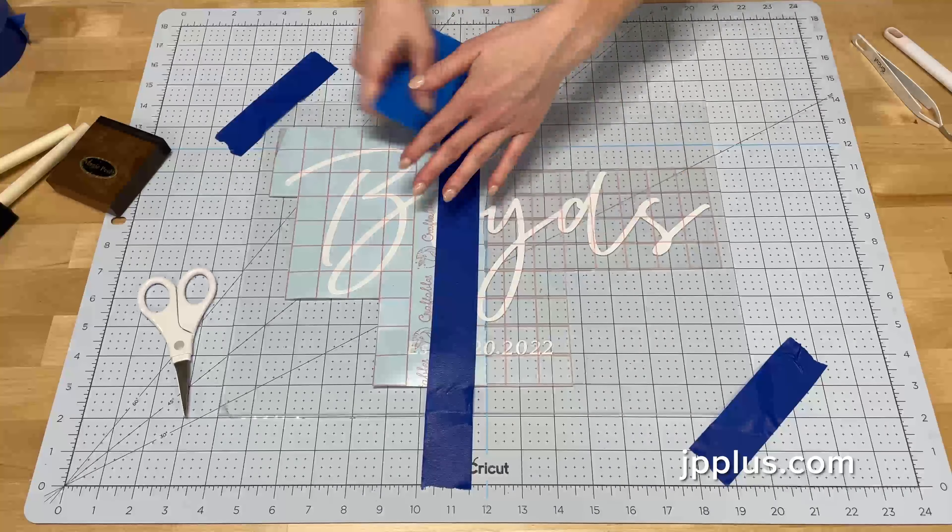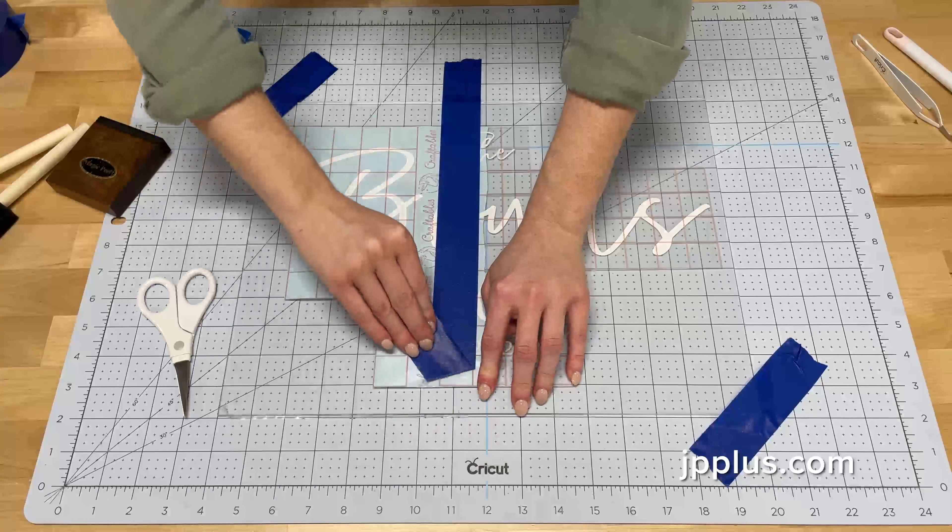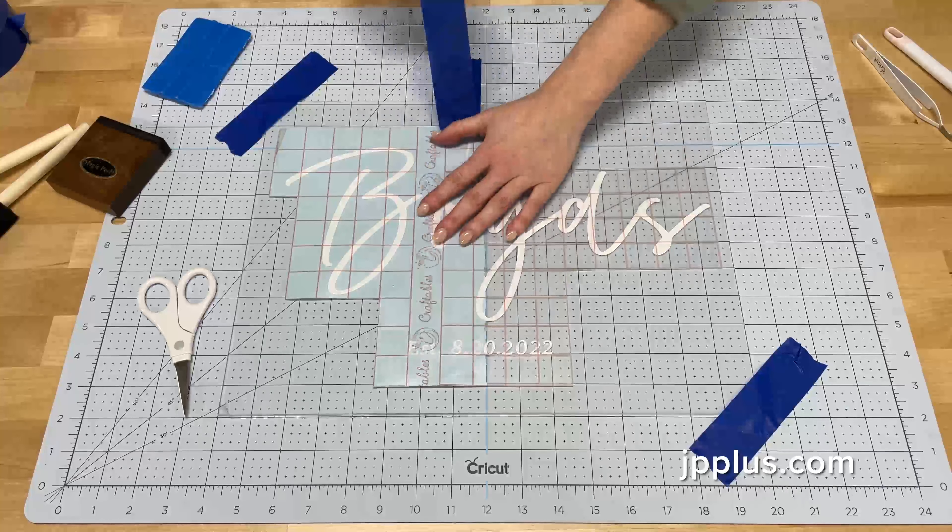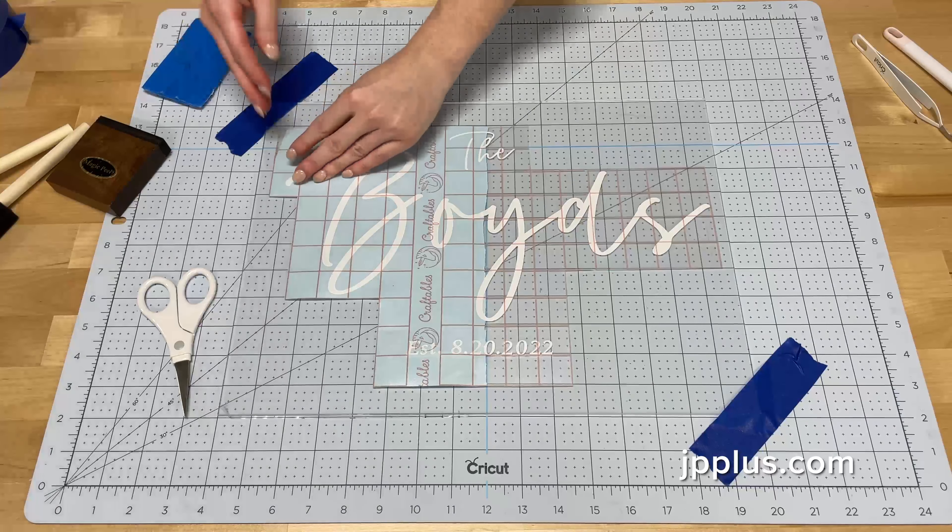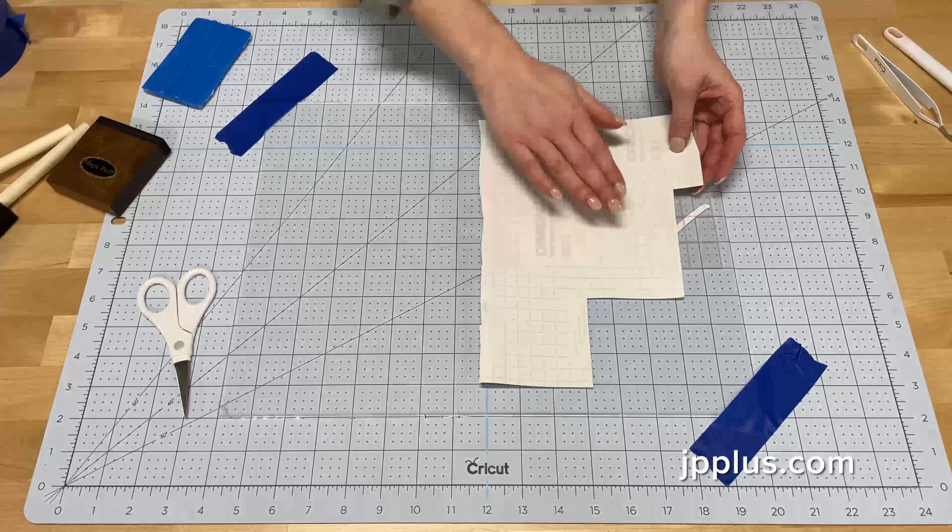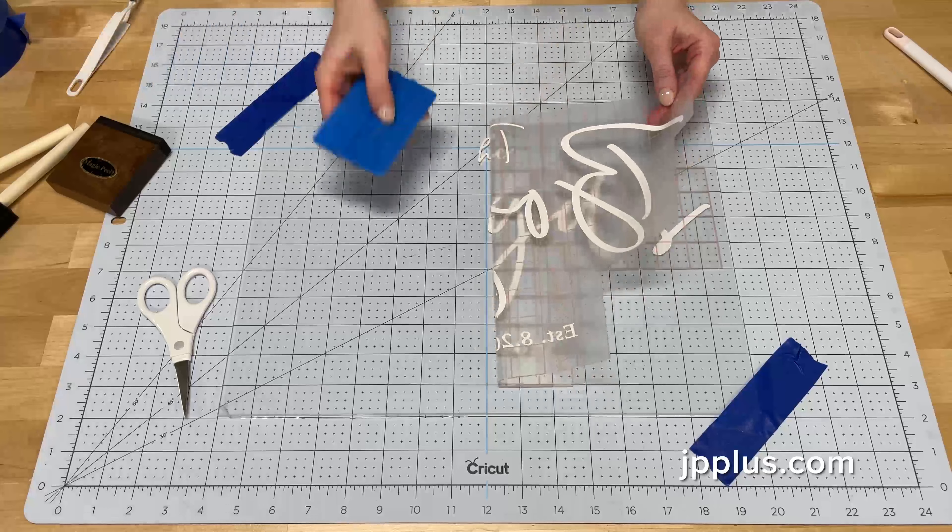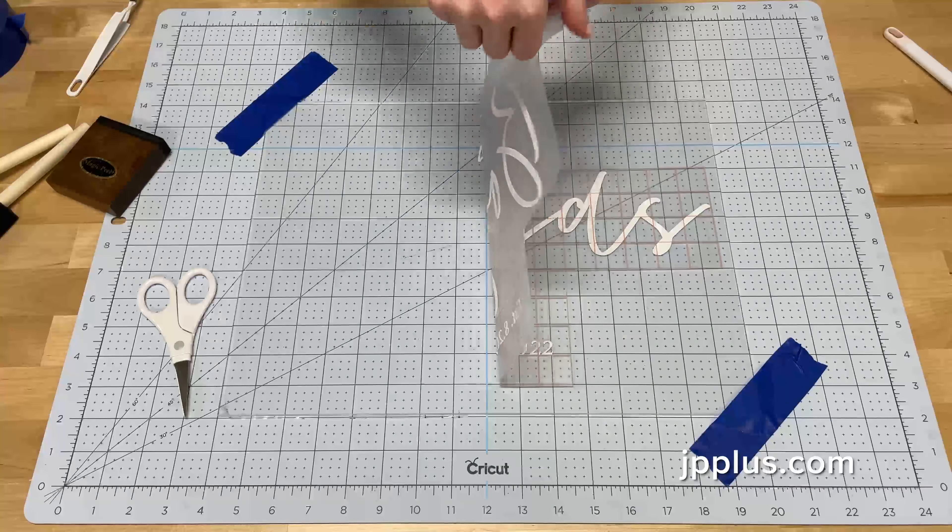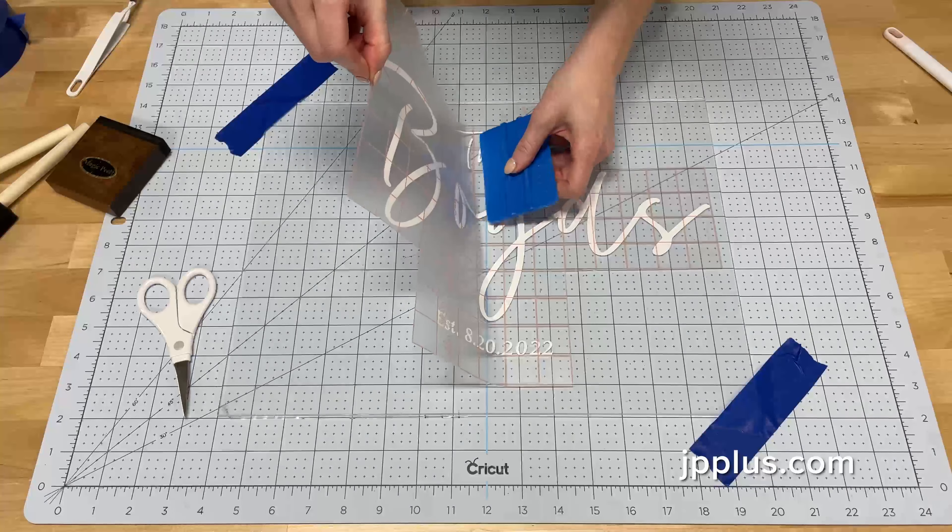Once we've done this side, we'll go ahead and move to the other side. We're going to take our painter's tape off and then fold over our other side and remove the paper from the transfer tape. So we've removed the paper from the other side of our transfer and we're going to go ahead and do the same thing and slowly use our squeegee to apply the vinyl to the clear acrylic.